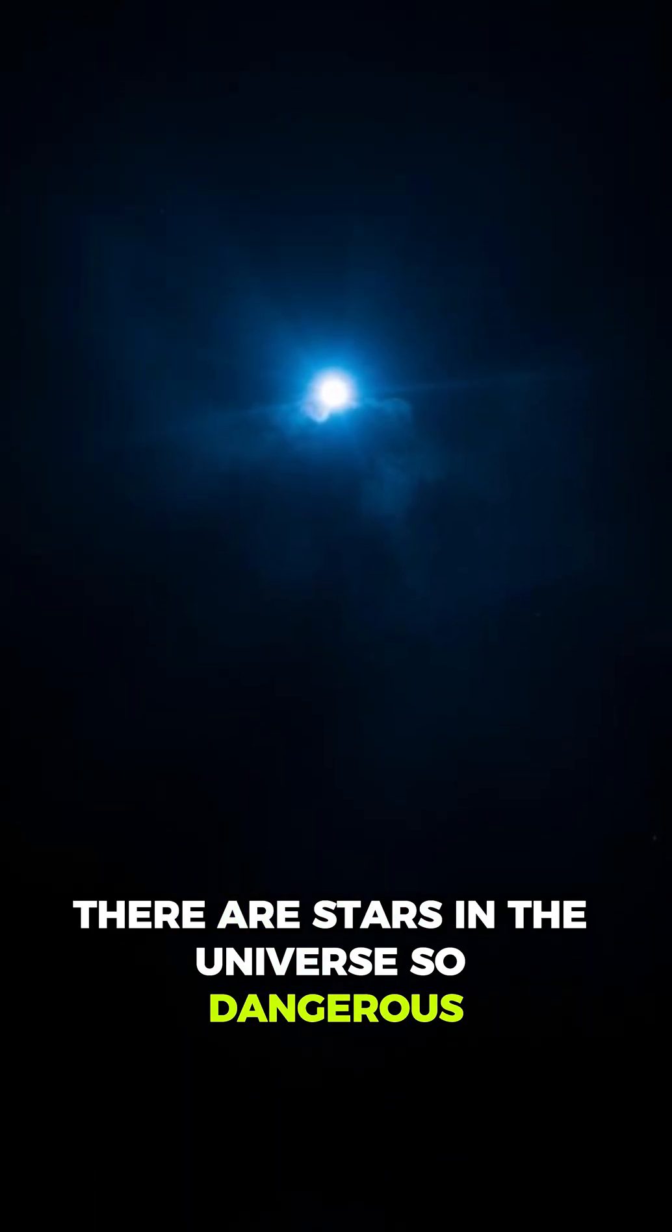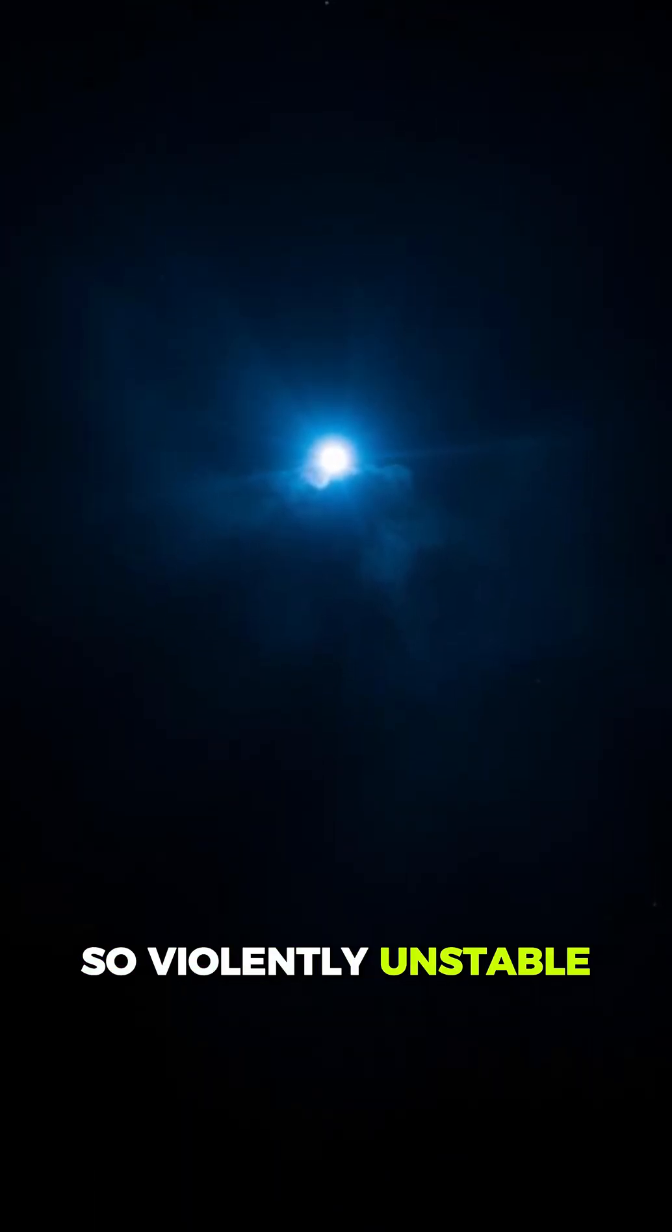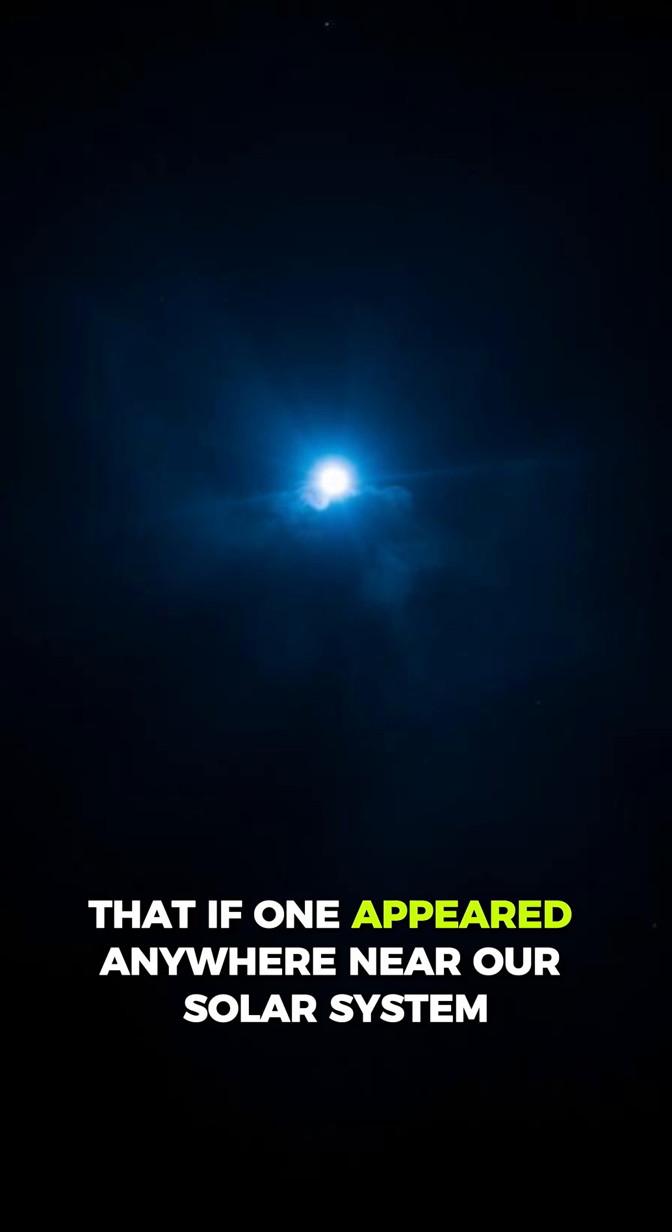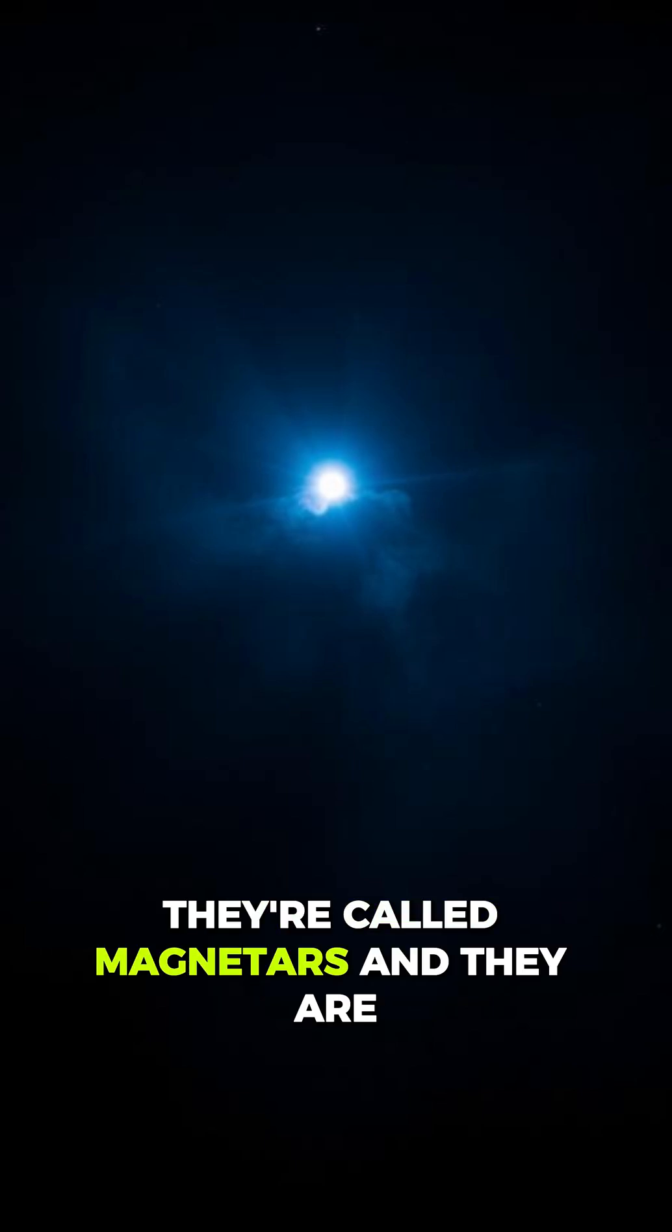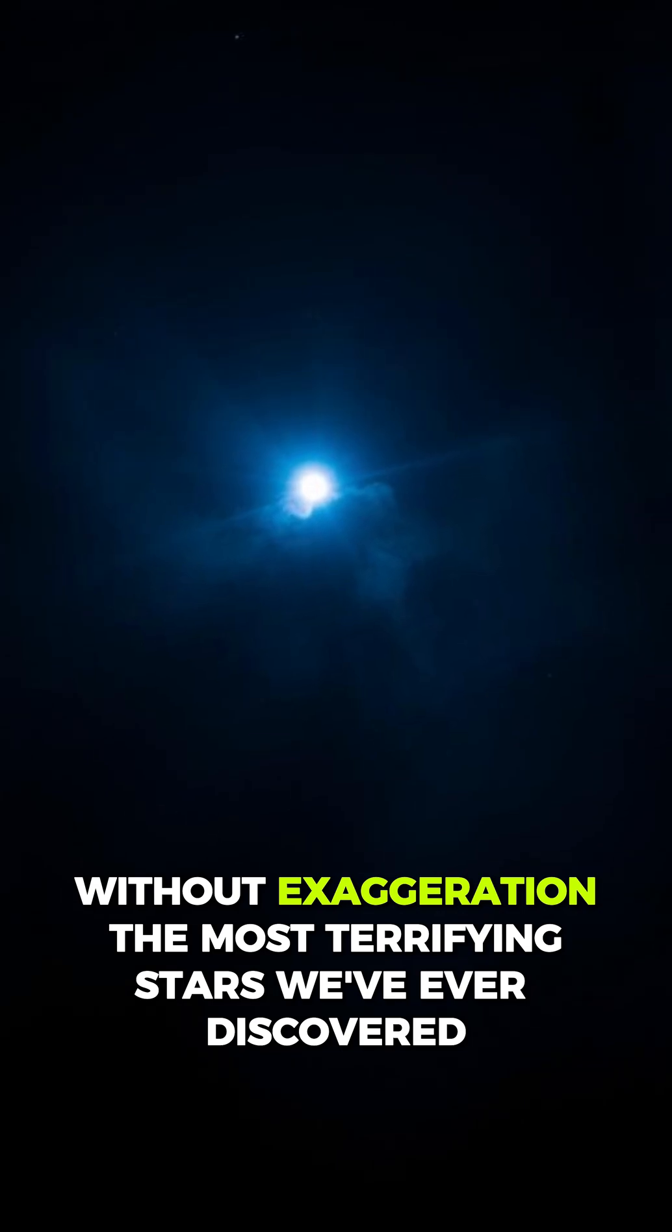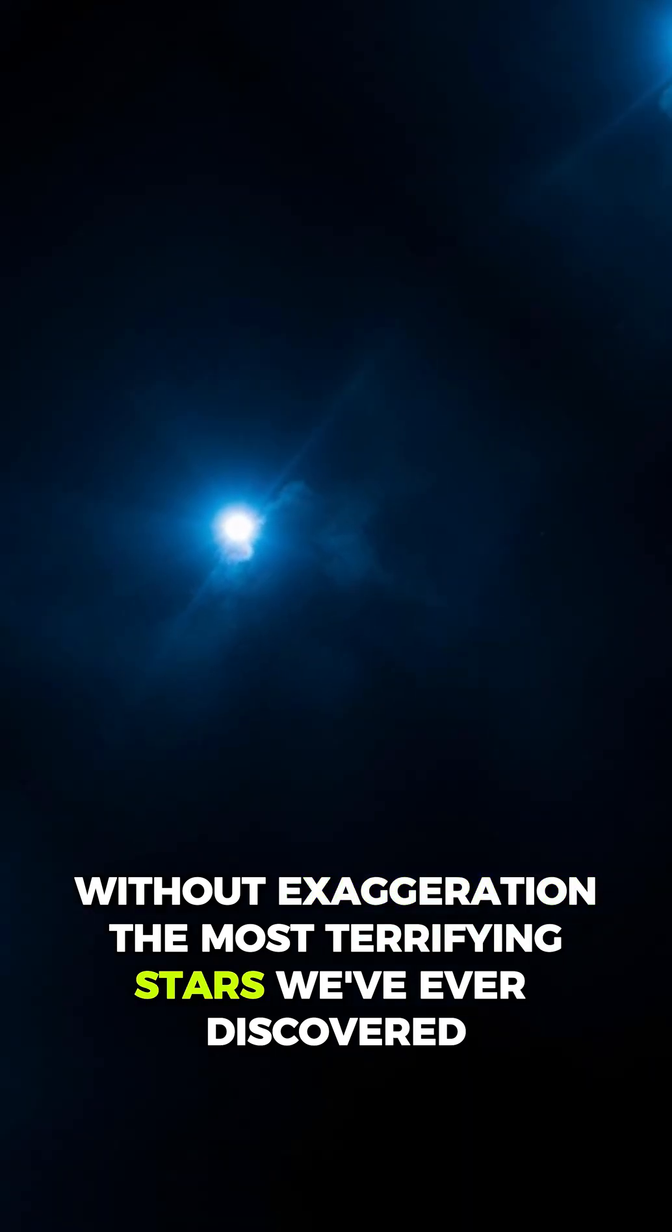There are stars in the universe so dangerous, so violently unstable, that if one appeared anywhere near our solar system, life on Earth would end instantly. They're called magnetars, and they are, without exaggeration, the most terrifying stars we've ever discovered.